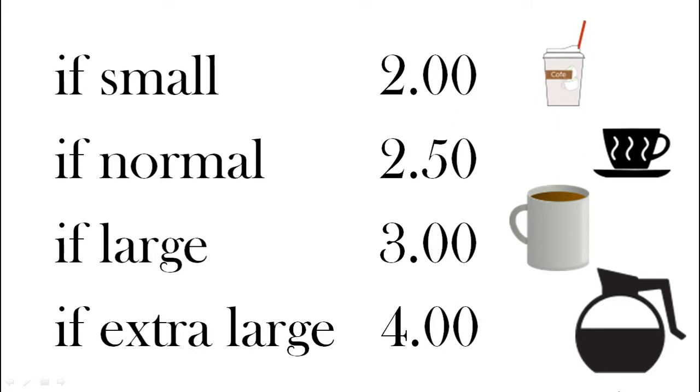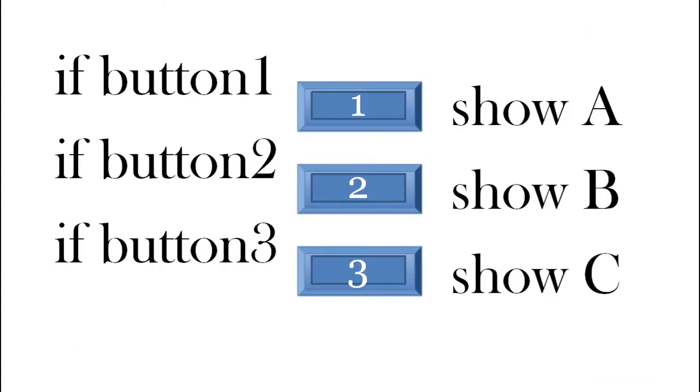In this example we also can choose only one option: small, normal, large, extra large. In a menu system we may push a button and something happens. In this example we had three buttons. We push the first one which shows A, number two shows B, number three shows C. These are all examples where we have multiple choice.